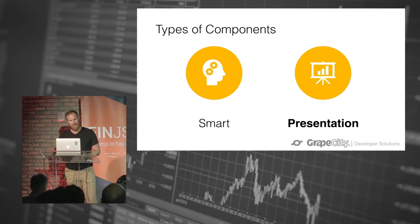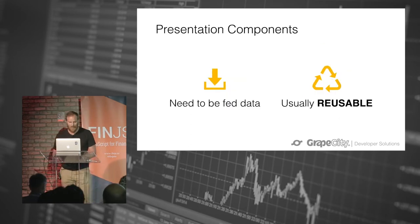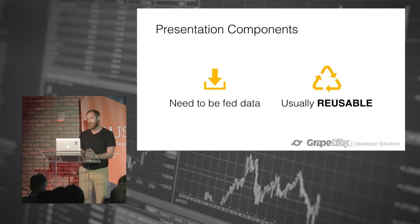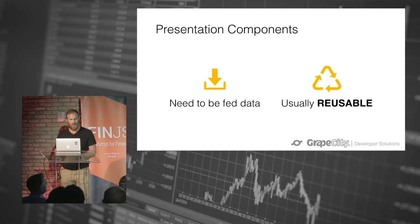Smart components can do things like pull in data from many different data sources, analyze data, and even rearrange and call in different presentation components. But let's talk about the presentation components — the dumb components. They don't think for themselves; they're really used to present data. They can manipulate data and send it back, but they are not smart enough to aggregate sources together. So they need to be fed data.